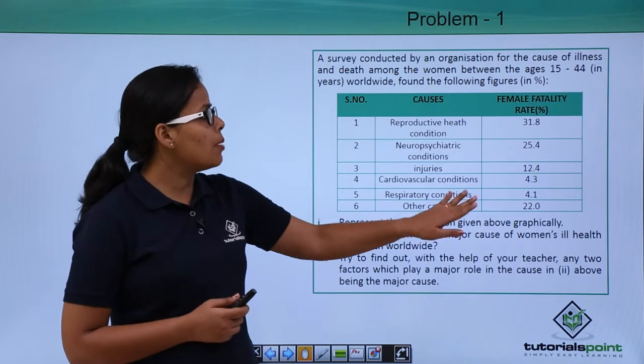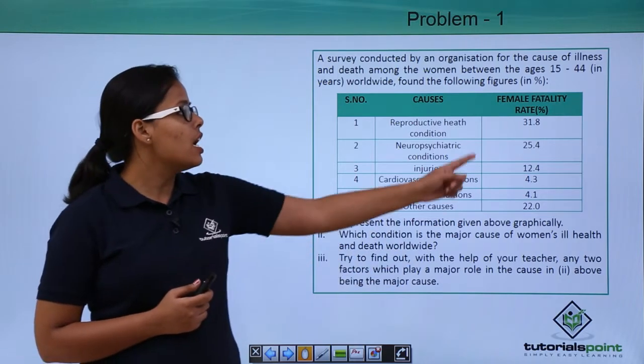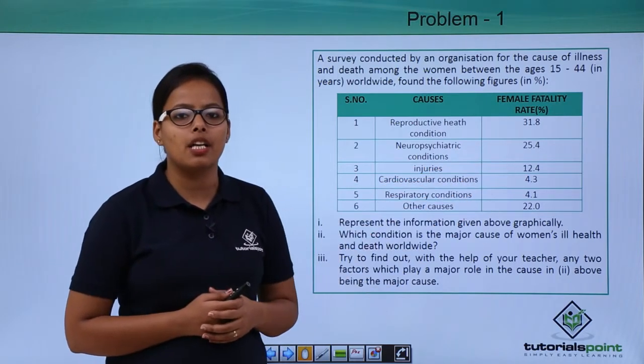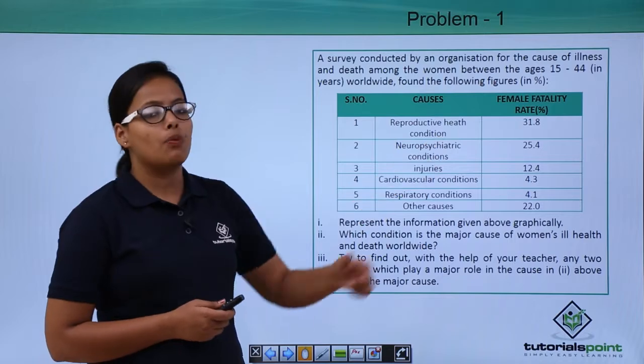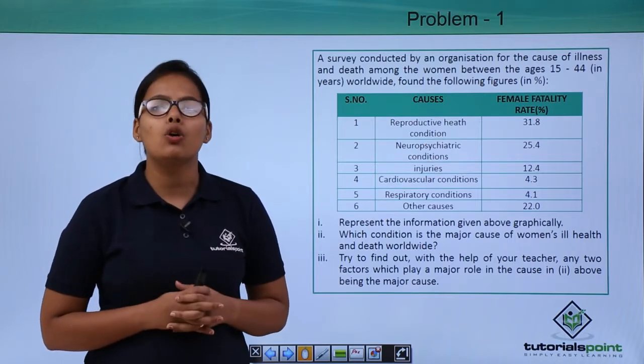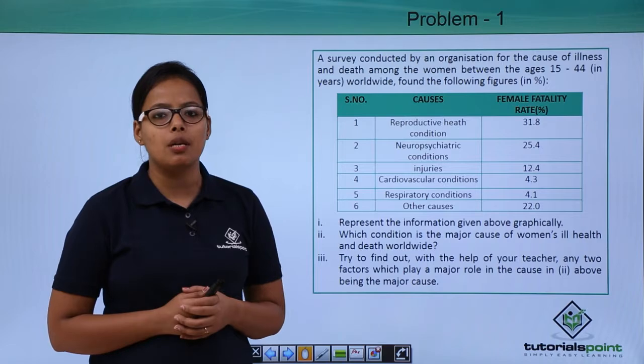In this table, you can see that the female fertility rate is highest for reproductive health conditions at 31.8. Now let's see the questions related to this table.